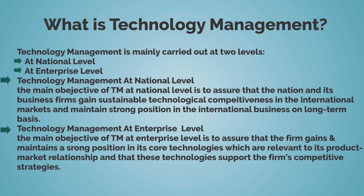Technology management is mainly carried out at two levels: at the national level and at enterprise level. Technology management at the national level involves ensuring that the nation and its business firms gain sustainable technological competitiveness in international markets and maintain a strong position in international business on a long-term basis. The main objective at enterprise level is to assure that the firm gains and maintains a strong position in its core technologies, which are relevant to its product-market relationship and support the firm's competitive strategies.